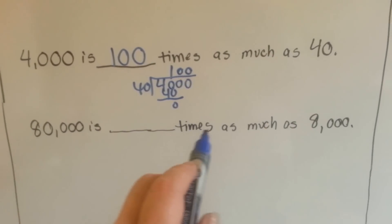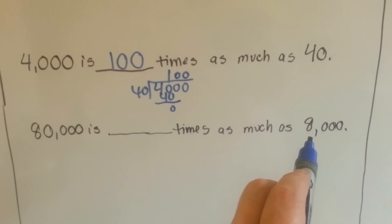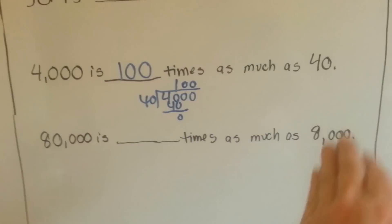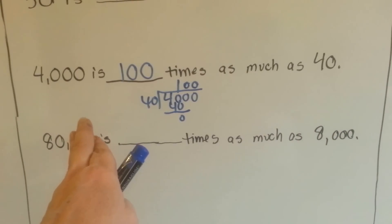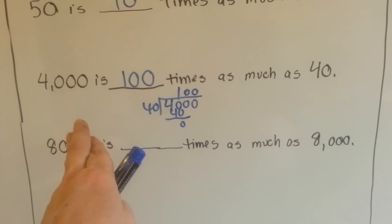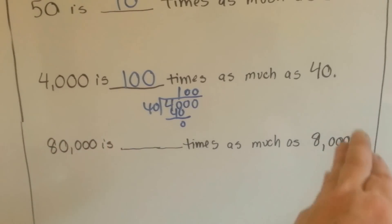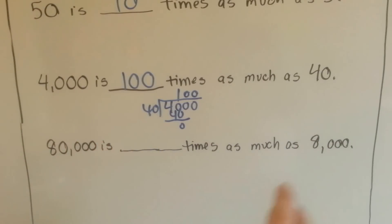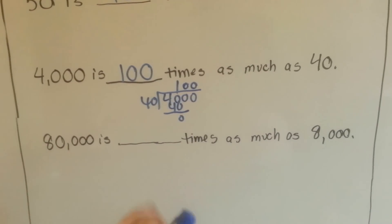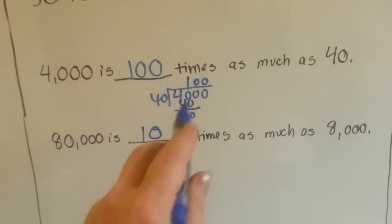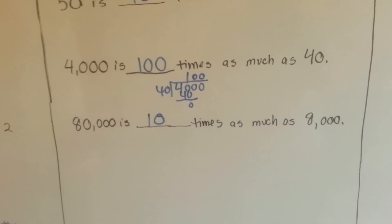80,000 is blank times as much as 8,000. Well, actually if you took those three zeros off and had an 8, and took those three zeros off and had an 80, 8 is how many times more than 80? What do you need to multiply 8 by to get 80? 10. You have 8 thousands or 80 thousands. See? So that would be 10. And you could do the division if you want to to check it or the multiplication.